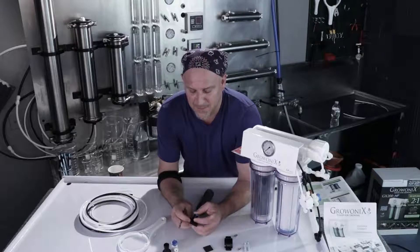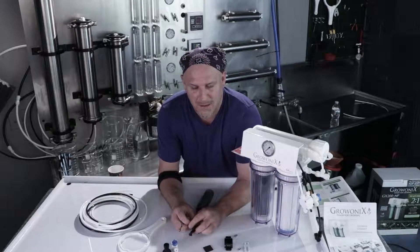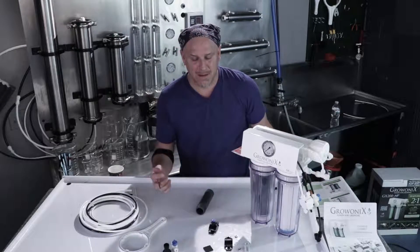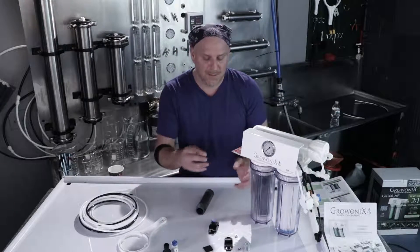So with all our units I like to plumb the drain side in first. This way if we plumb up to the input side and accidentally turn the water on we don't make a mess. So I like to work backwards through the system.